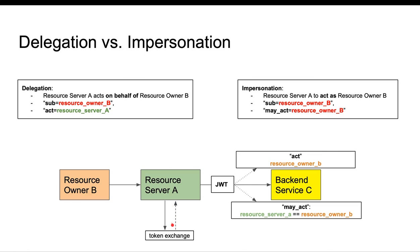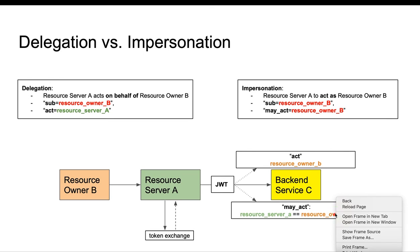The authorization server would issue a JSON Web Token that may include a claim called 'act' (actor). In this case, the token indicates the resource server is acting on behalf of the resource owner against a backend service. If this is meant for impersonation, the JSON Web Token may include a claim called 'may_act'. In this case, resource server A is able to impersonate resource owner B, making resource server A effectively the same as resource owner B.